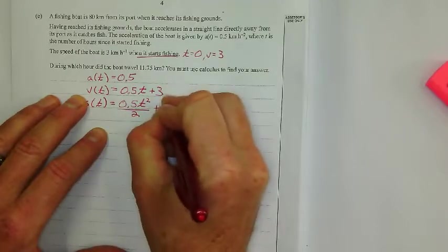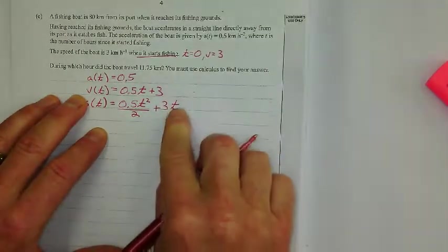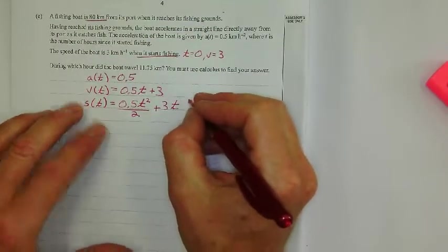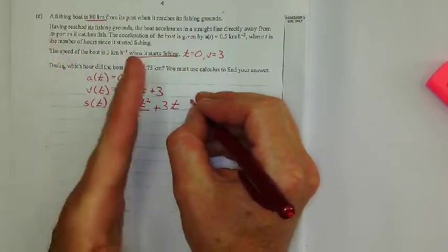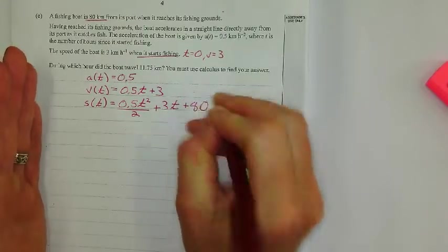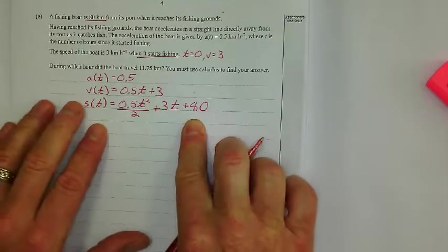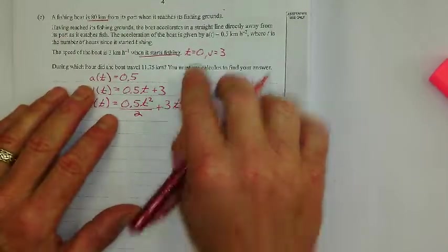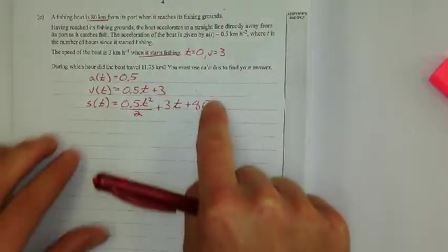plus 3t. Now here's where that plus 80 kicks in. All right. So the problem starts once they're 80 kilometers away from the port. So when time equals 0, they're 80 kilometers away from that port. So these are the three biggest equations you get from this pretty beefy word problem here.